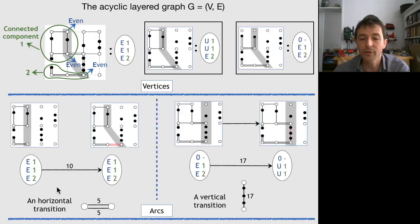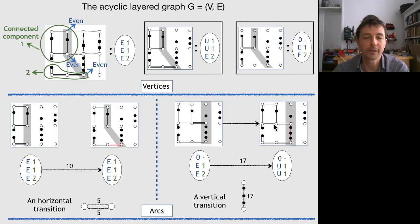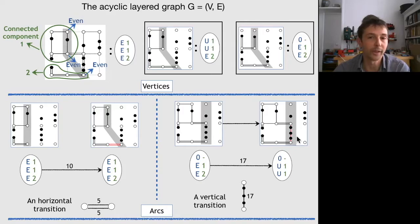We can also see an example of adding a vertical transition, where we move from a subproblem represented by 0, E1, E2 to one where we add this transition, giving us 0, U1, U1 — a single connected component with uneven degrees. The distance on the arc is again the distance of crossing an aisle.